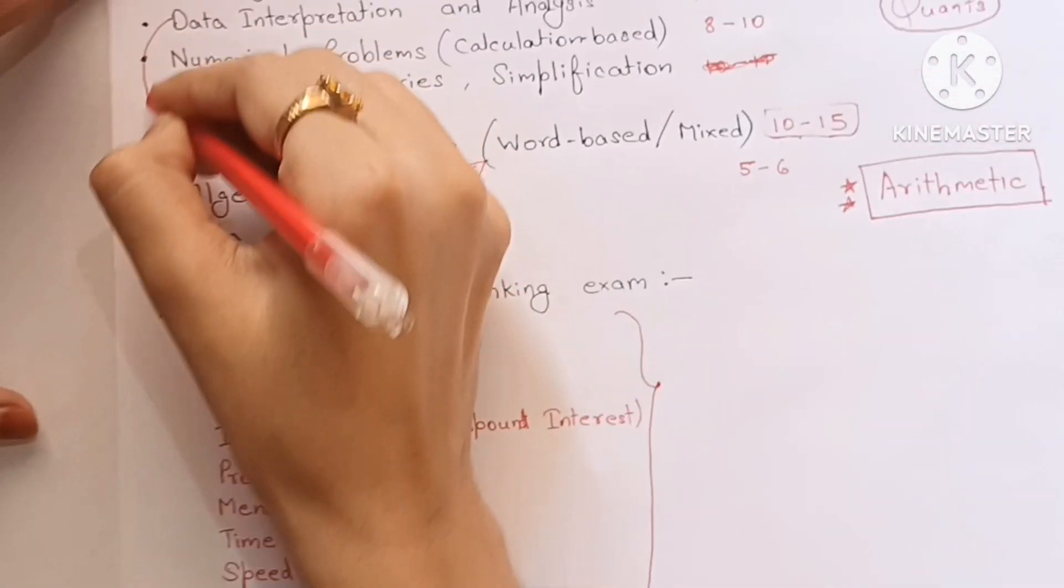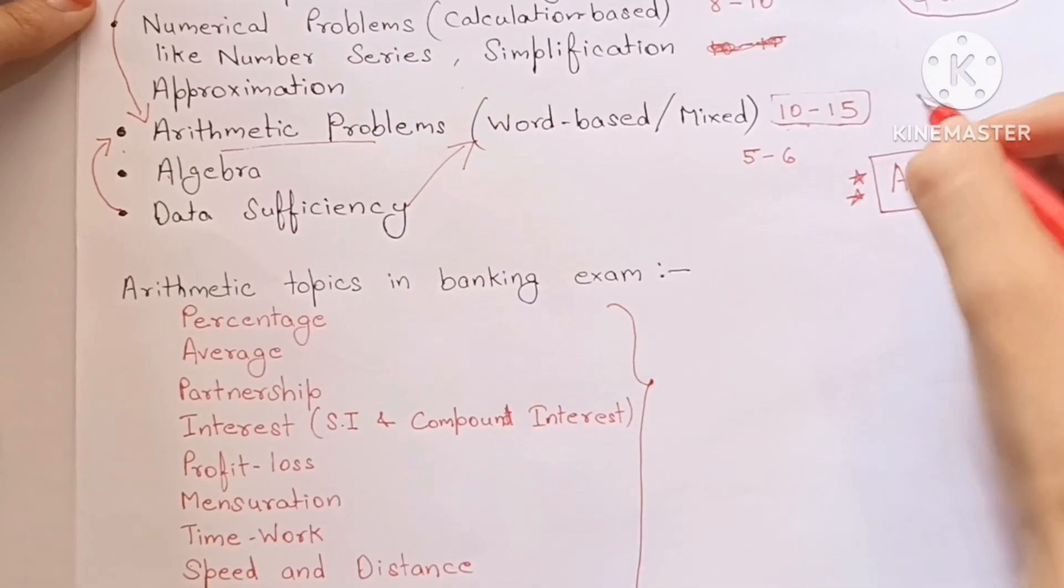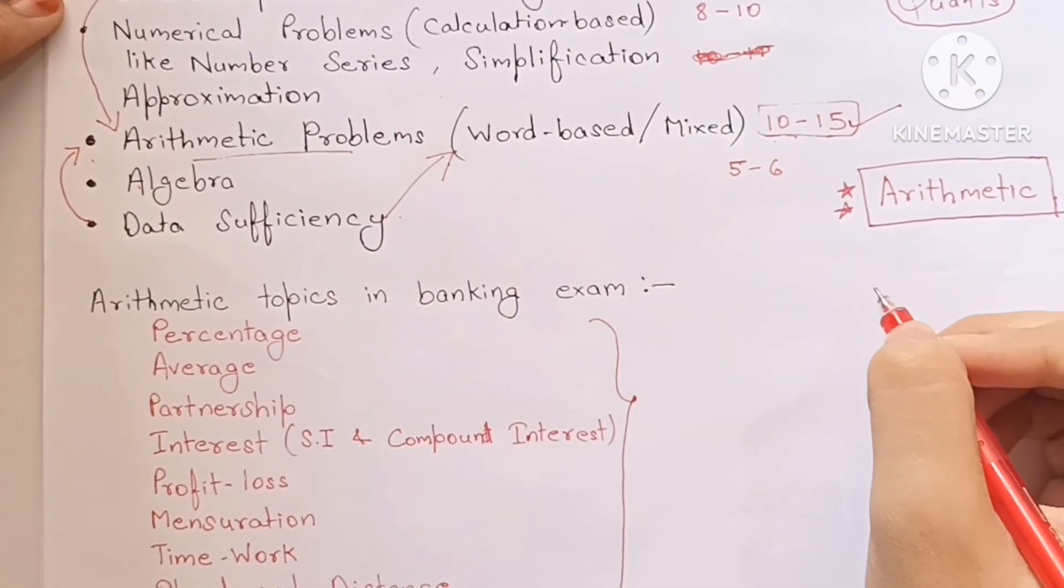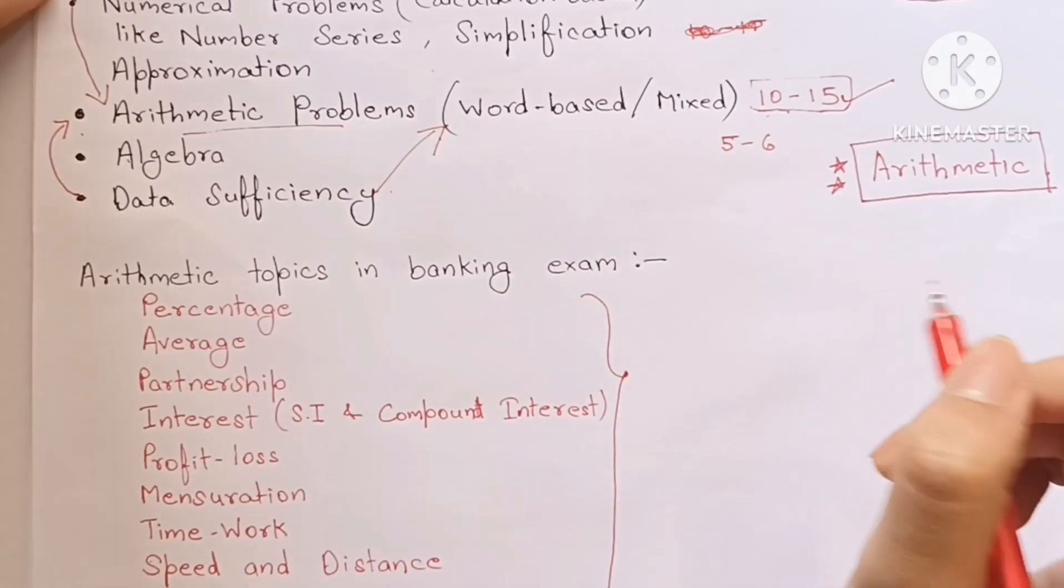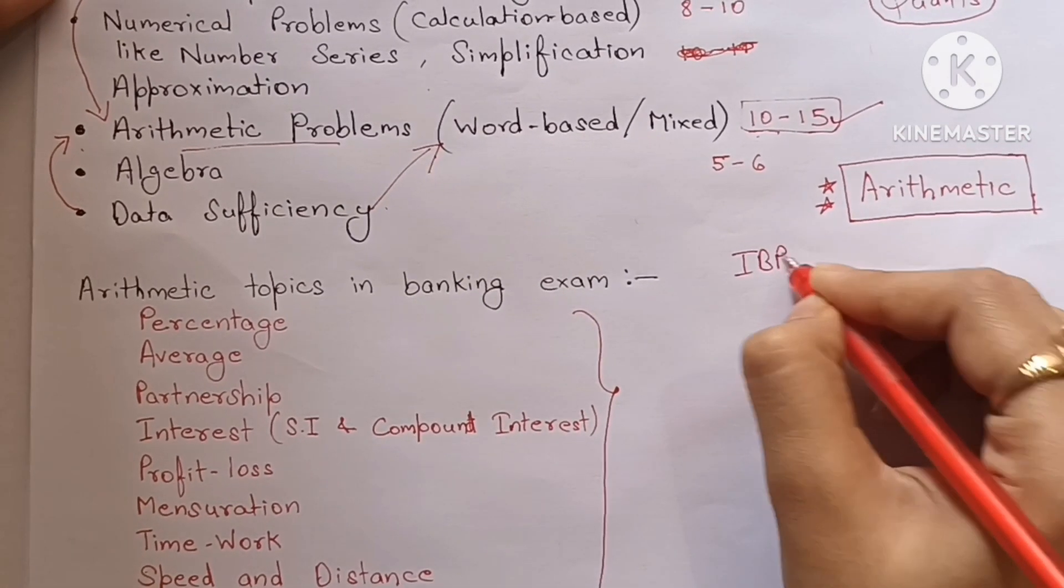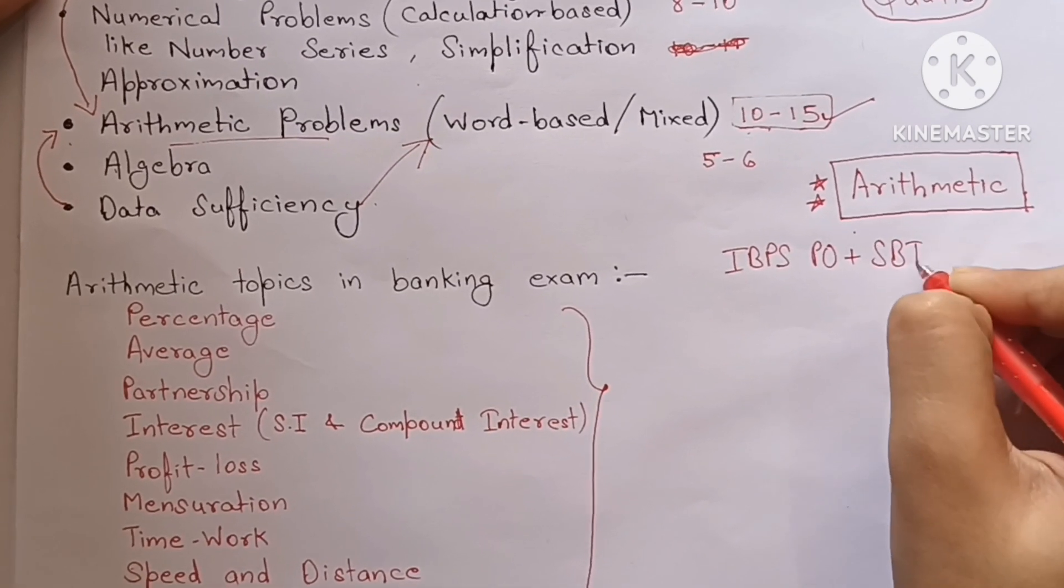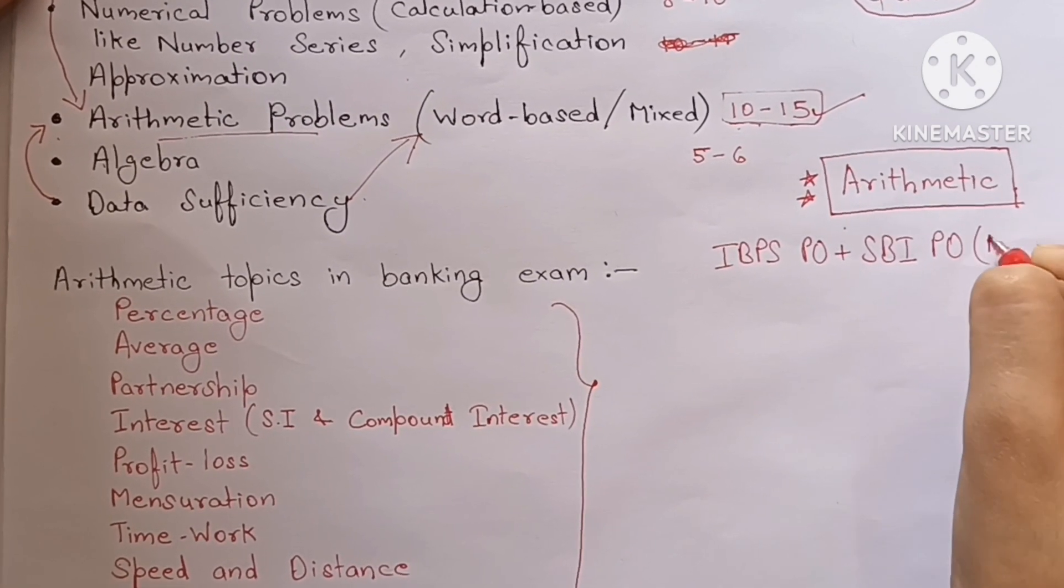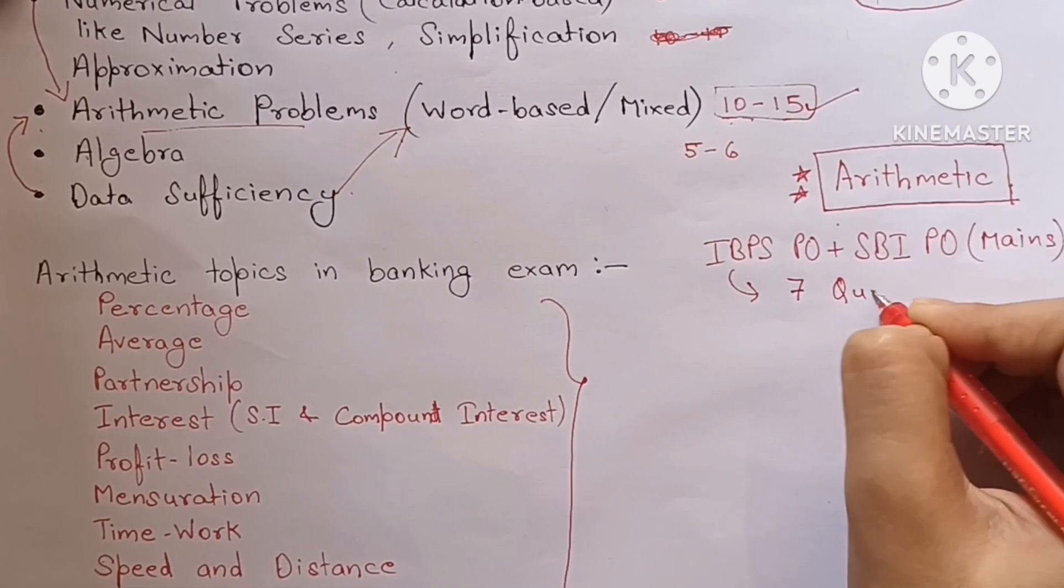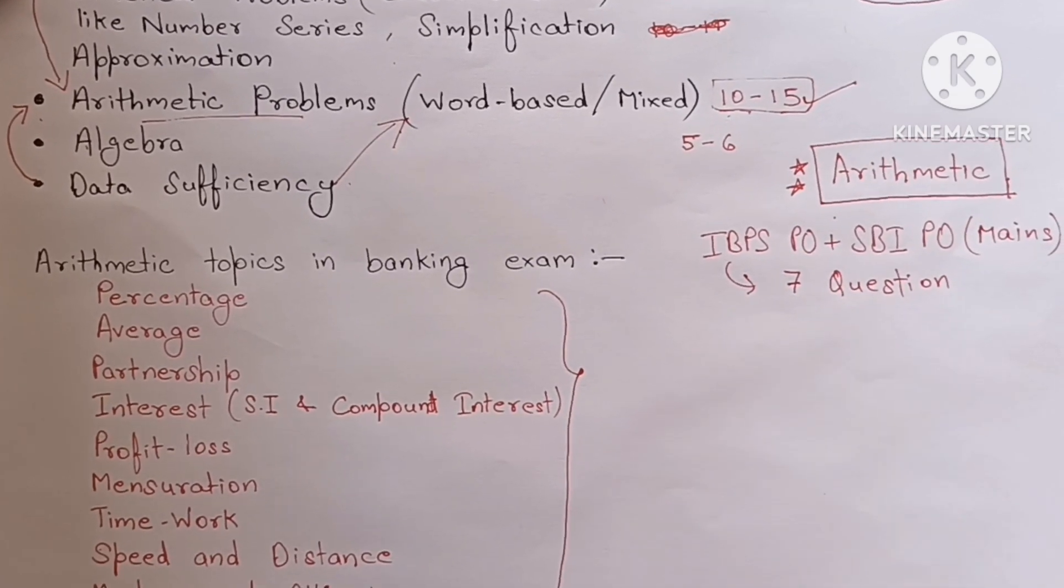So it is really important to complete those topics of arithmetic that belong to our banking syllabus, and in mains too. If I tell you, last year when I appeared in SBI PO mains and IBPS PO mains exam, the section of quants was really hard and attempting four to five questions were not so easy for 90 percent of the students. And that's why the sectional cutoff of math in IBPS PO mains was also quite low.